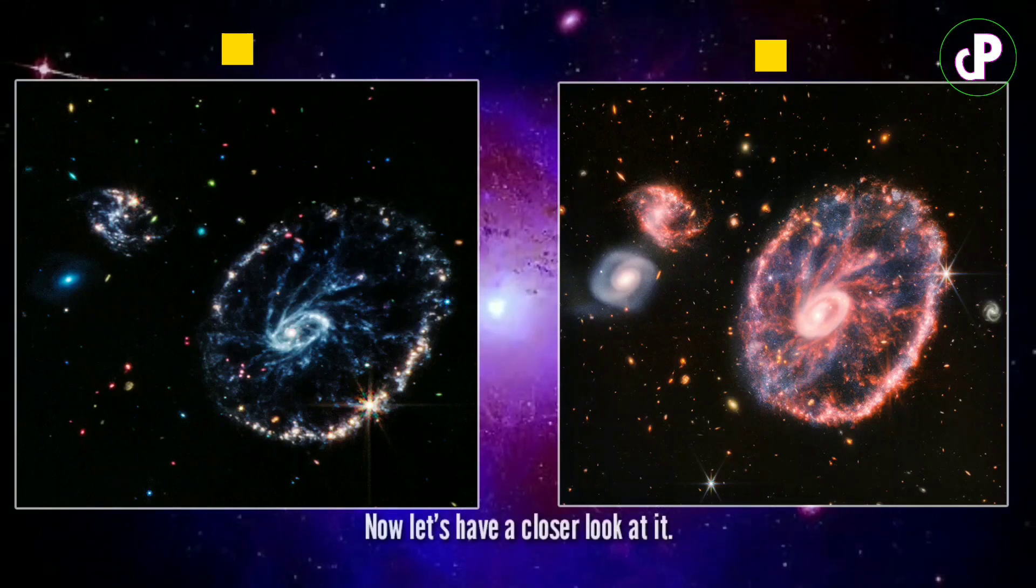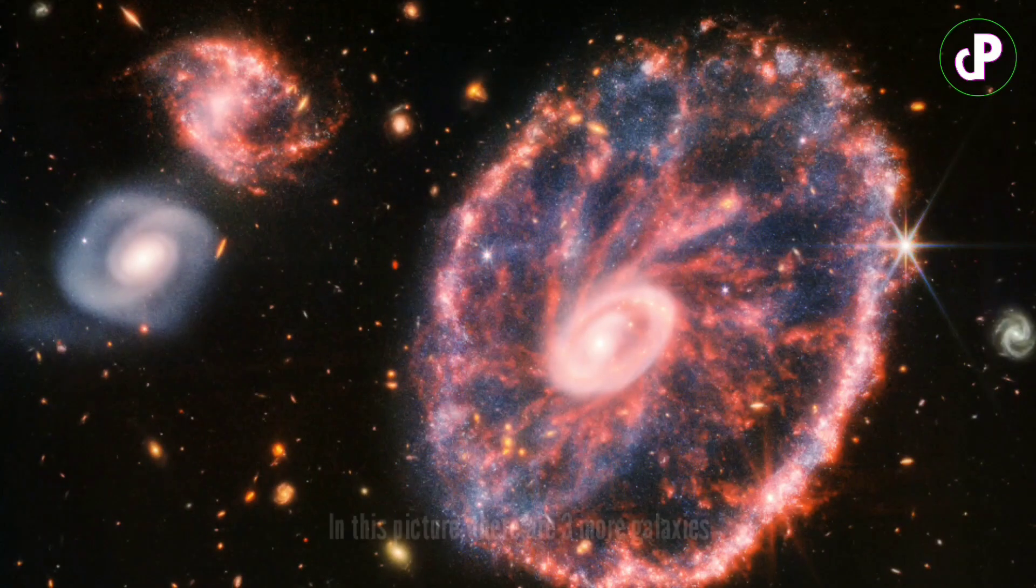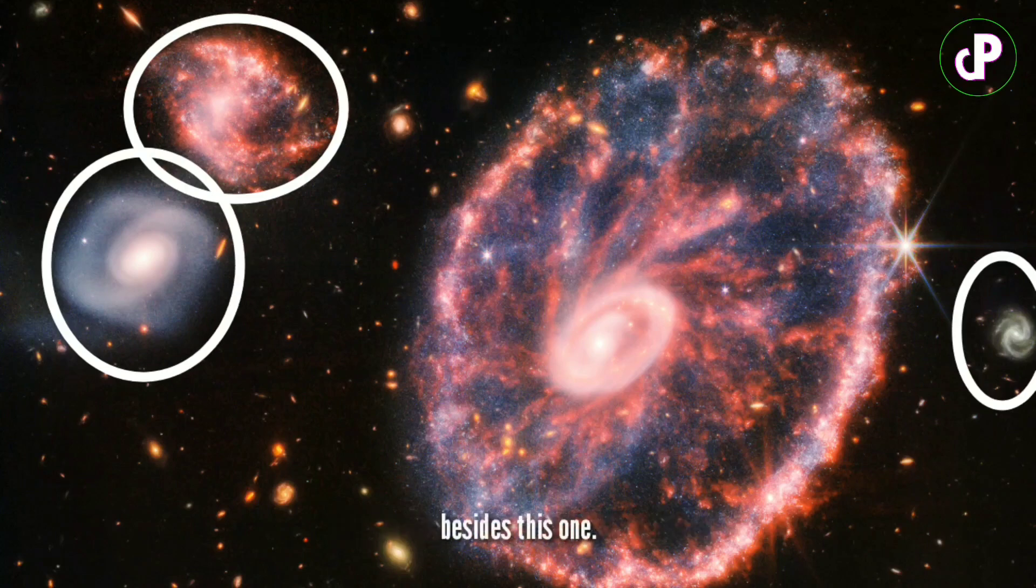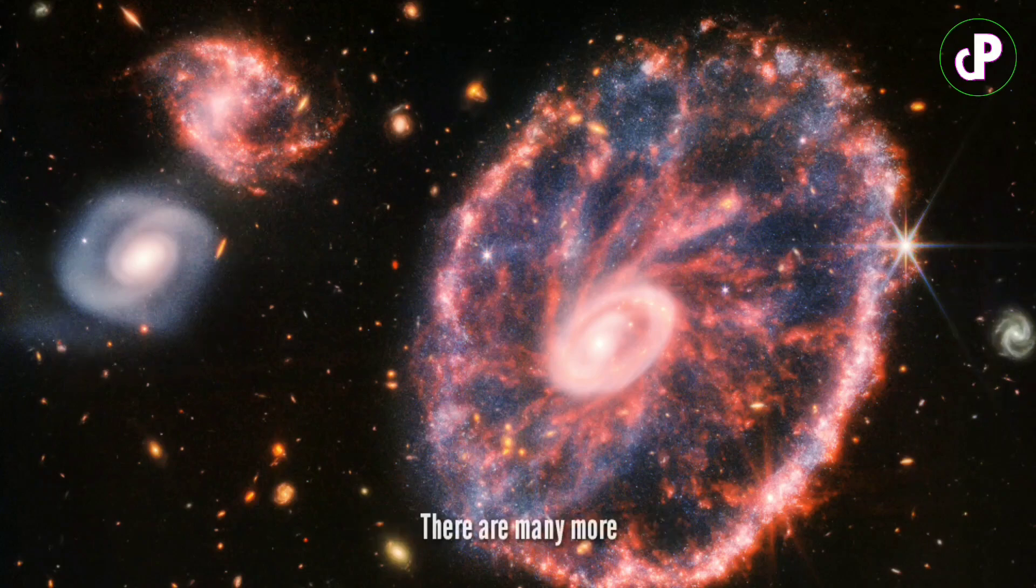Now let's have a closer look at it. In this picture, there are three more galaxies besides this one—two on the left and one on the right. There are many more, but they are barely visible.